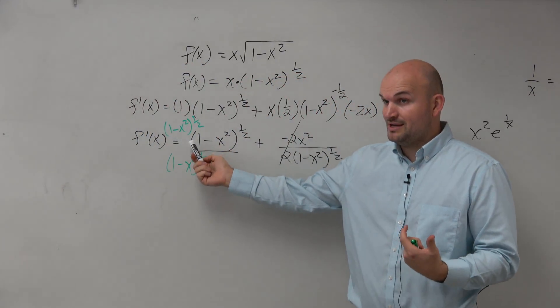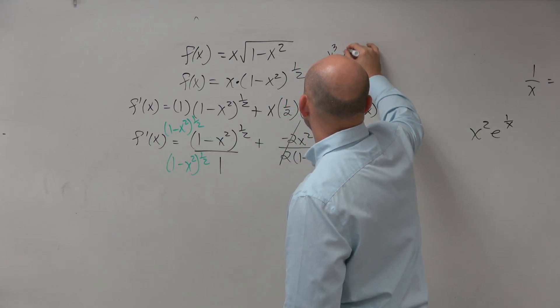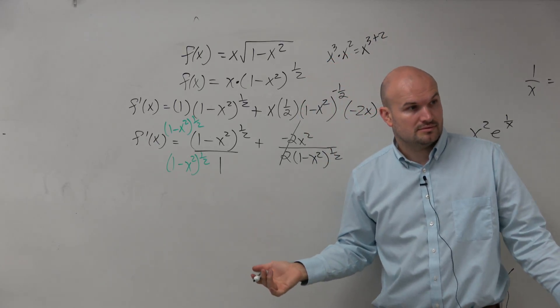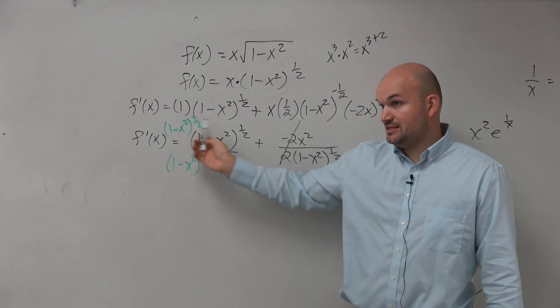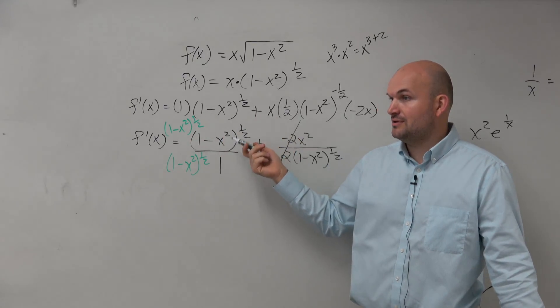Now, again, guys, remember when you multiply exponents, you know, x cubed times x squared equals x to the 3 plus 2, right? These quantities are exactly the same, so you just add the powers. So what's 1 half plus 1 half? 1.